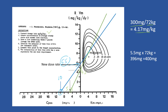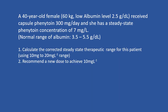Next, you can identify the Vmax, which will be 8. Draw the vertical line to the x-axis; this will give the Km, which is 4, and the Vmax is 8. To calculate the new dose, it will be 5.5 multiplied by 72, which is approximately 396 mg, so the closest rounded-up value will be 400 mg.